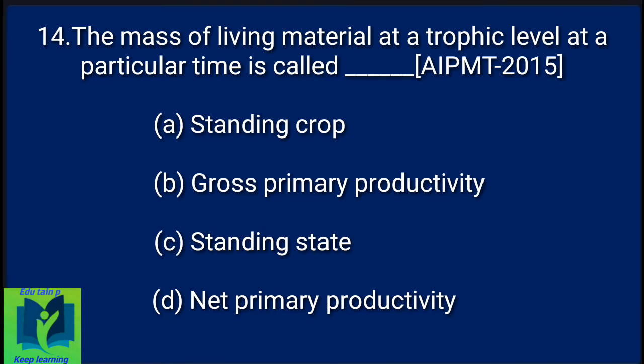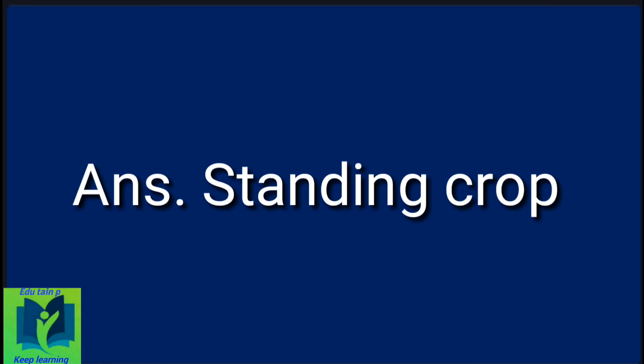The mass of living material at a trophic level at a particular time is called: Option A: Standing crop. Option B: Gross primary productivity. Option C: Standing state. Option D: Net primary productivity. Answer: Standing crop.